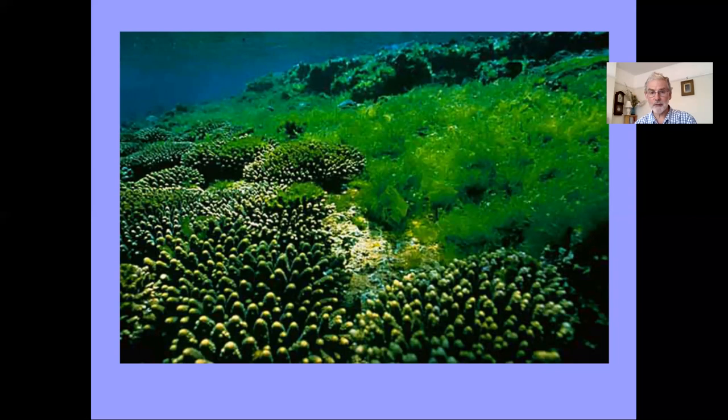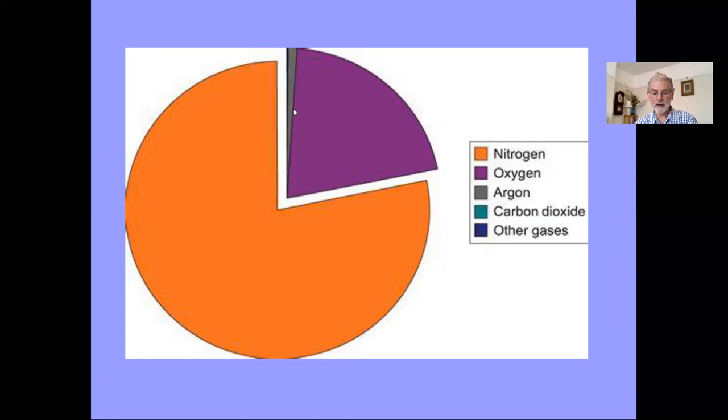As it is, the Earth's atmosphere contains 78% nitrogen and 21% oxygen and only 0.04% carbon dioxide. I'm sure you remember all this from your school days.